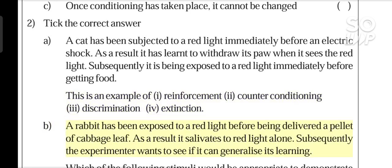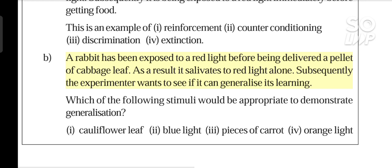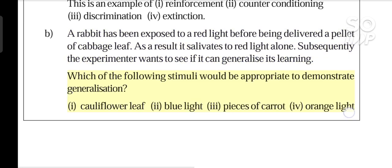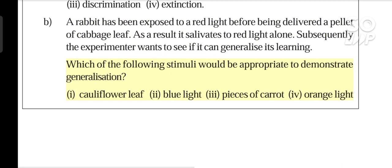Self-assessment B: A rabbit has been exposed to a red light before being delivered a pellet of cabbage leaf. As a result it salivates to red light alone. Subsequently the experimenter wants to see if it can generalize its learning. Which of the following stimuli would be appropriate to demonstrate generalization? I. Cauliflower leaf, II. Blue light, III. Pieces of carrot, or IV. Orange light?